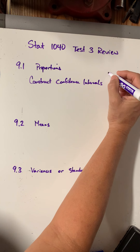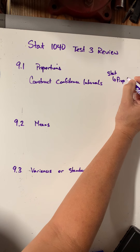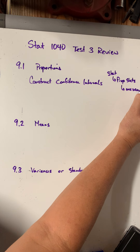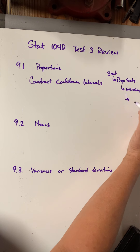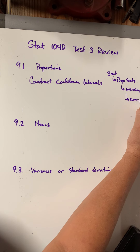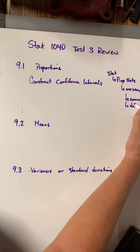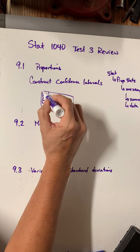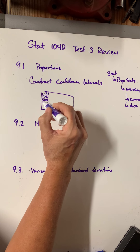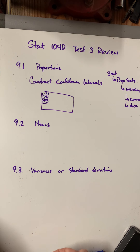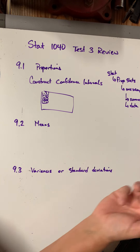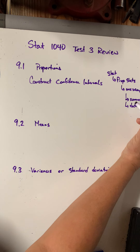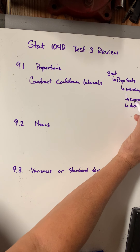If it was a proportion, you'd go to Stat > Proportion Stats, and typically it was one sample. Then usually it was with summary — they'd summarize the information to fill into the boxes. Sometimes it was with data, meaning you could open the spreadsheet with all the numbers already filled in, which is easier because StatCrunch does everything for you. Most problems were with summary, so they'd give you the values to put into the dialog box.